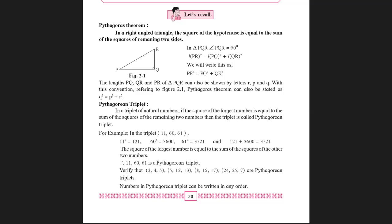11 squared is 121, 60 squared is 3600, 61 squared is 3721. Take the squares of the two smaller numbers: 11 squared plus 60 squared equals 121 plus 3600, which equals 3721, equal to 61 squared. If the sum comes equal to the square of the largest number, then the numbers form a Pythagorean triplet. If not, they do not form a Pythagorean triplet.